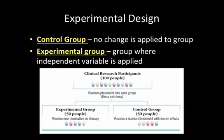In experimental design, we want to consider having two separate groups: a control group where no change is applied, and an experimental group where the independent variable will be applied. This way we are able to actually see a change rather than just assume something is going to change. We have a control group to compare the experimental group to, to see if there is any difference.